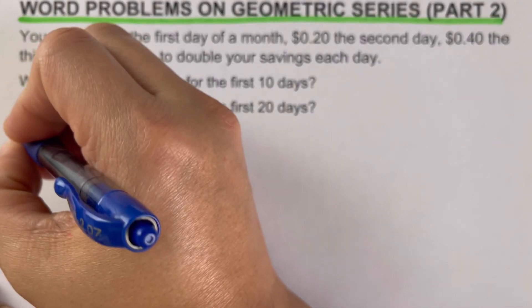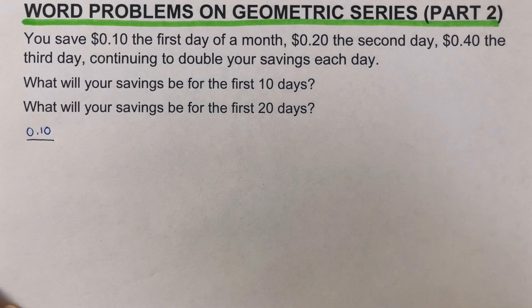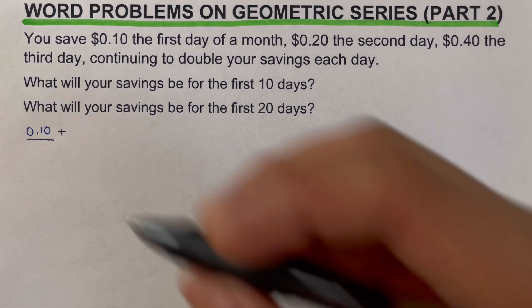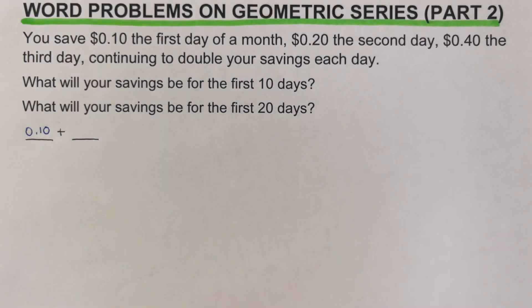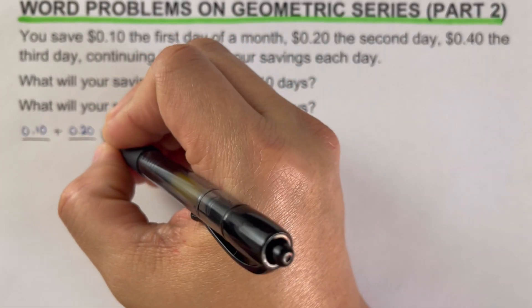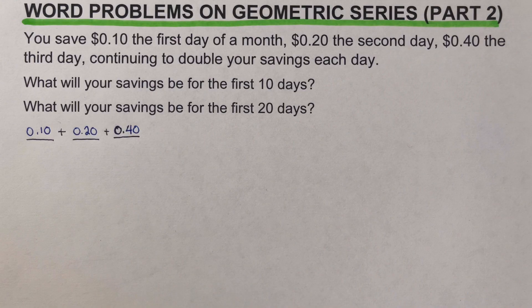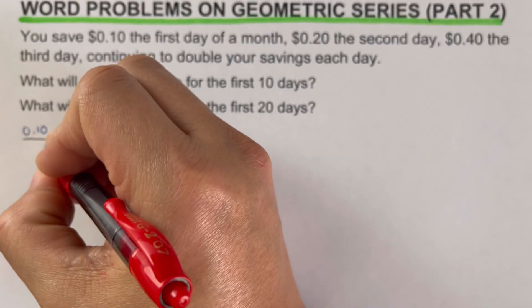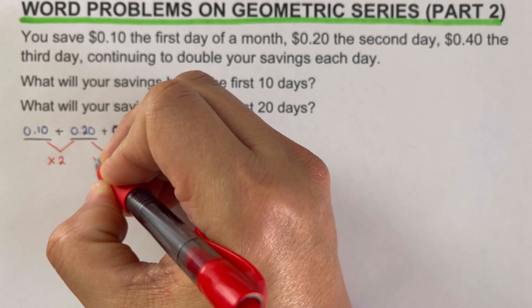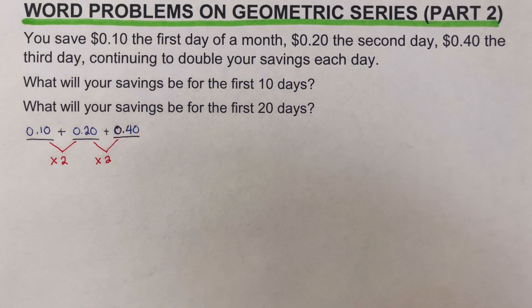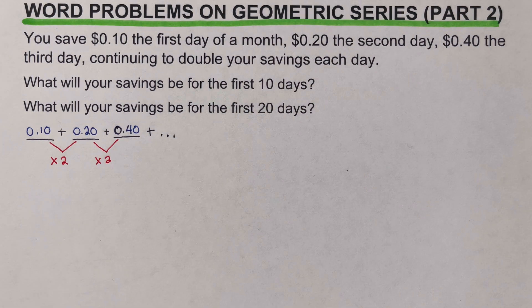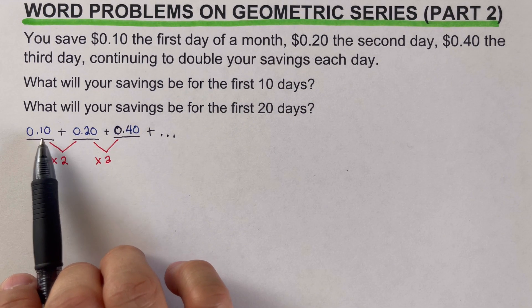So that this problem would make sense, we're going to write it out. On the first day we are putting in 10 cents, represented as 0.10. On the second day, we add 20 cents — 0.20. On the third day, 40 cents — 0.40. It says we double the savings each day, which means we are multiplying by two each time: 0.10 × 2 = 0.20, 0.20 × 2 = 0.40, and so on.